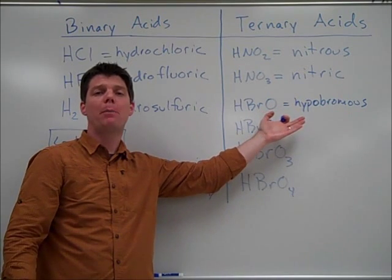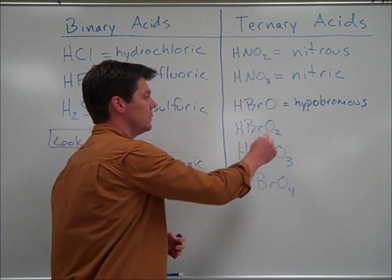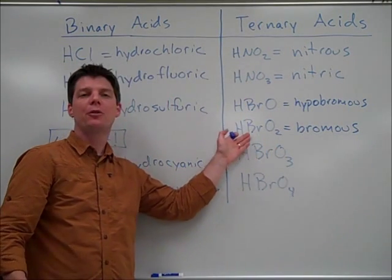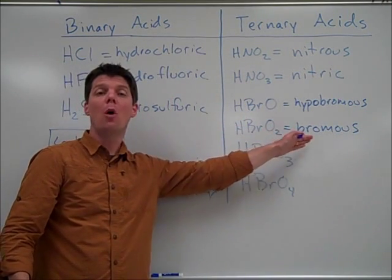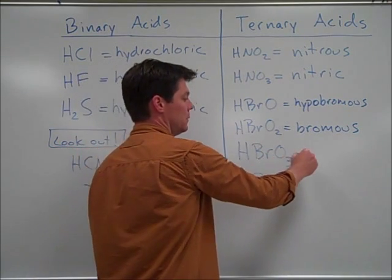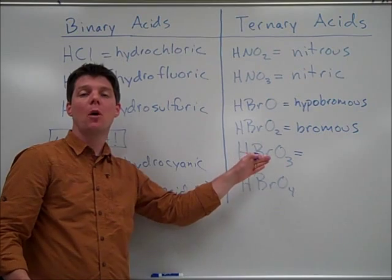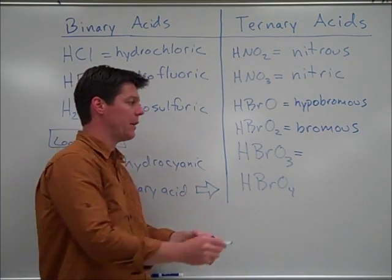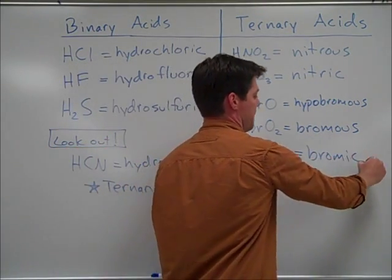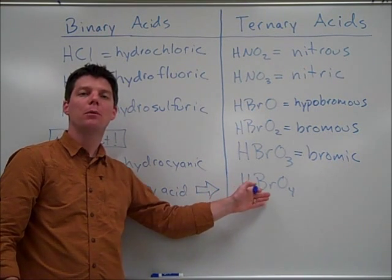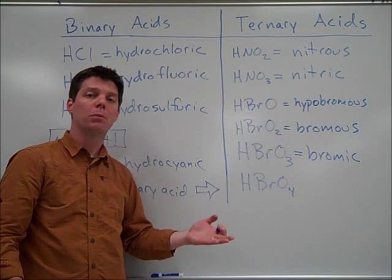HBRO would be hypobromous acid. Hydrogen bromite gives us bromous acid. Hydrogen bromate gives bromic acid. And finally, hydrogen perbromate gives us perbromic acid.